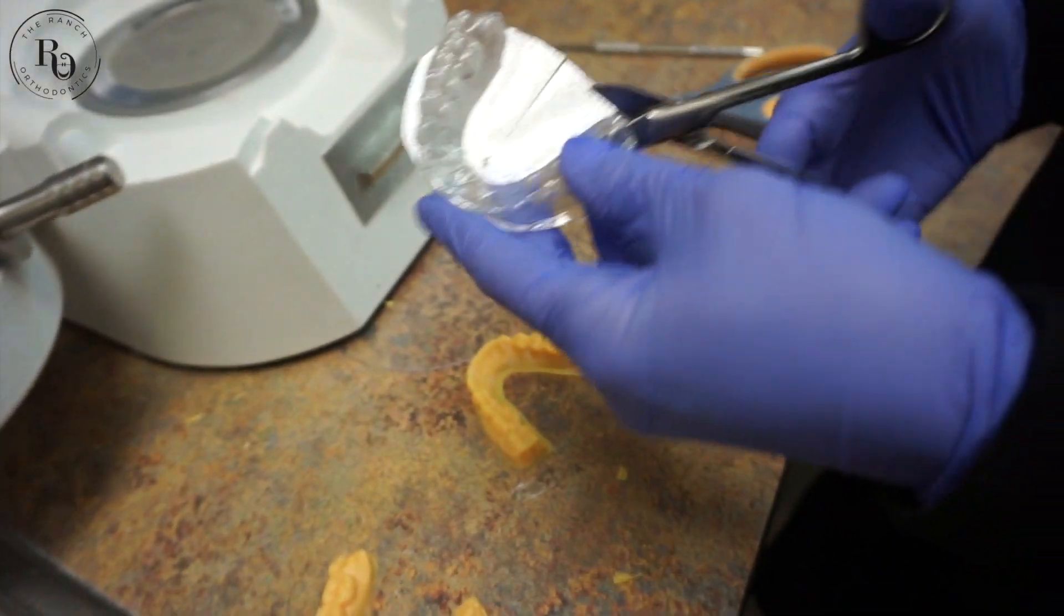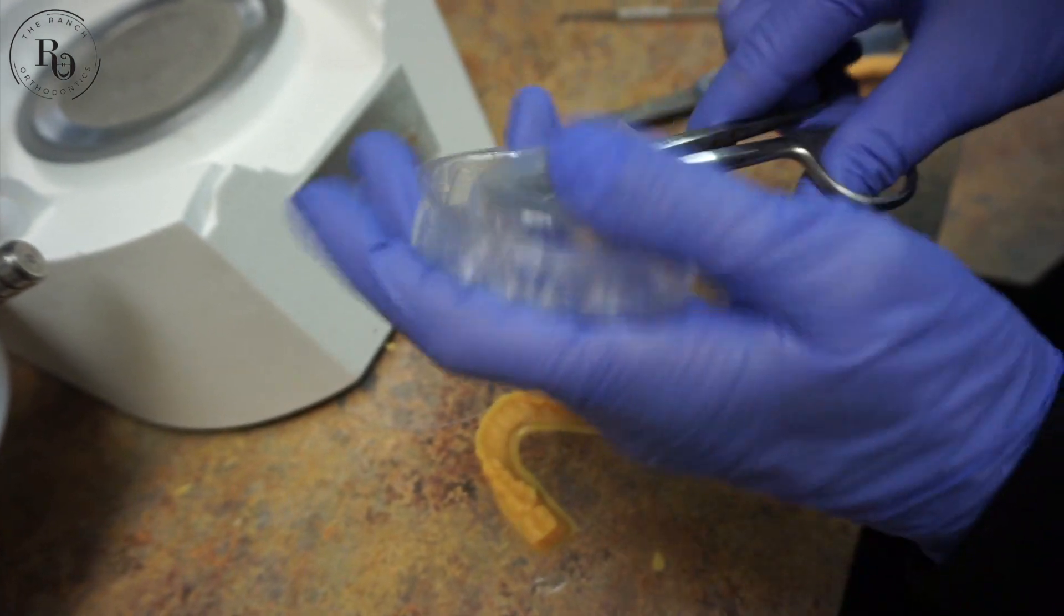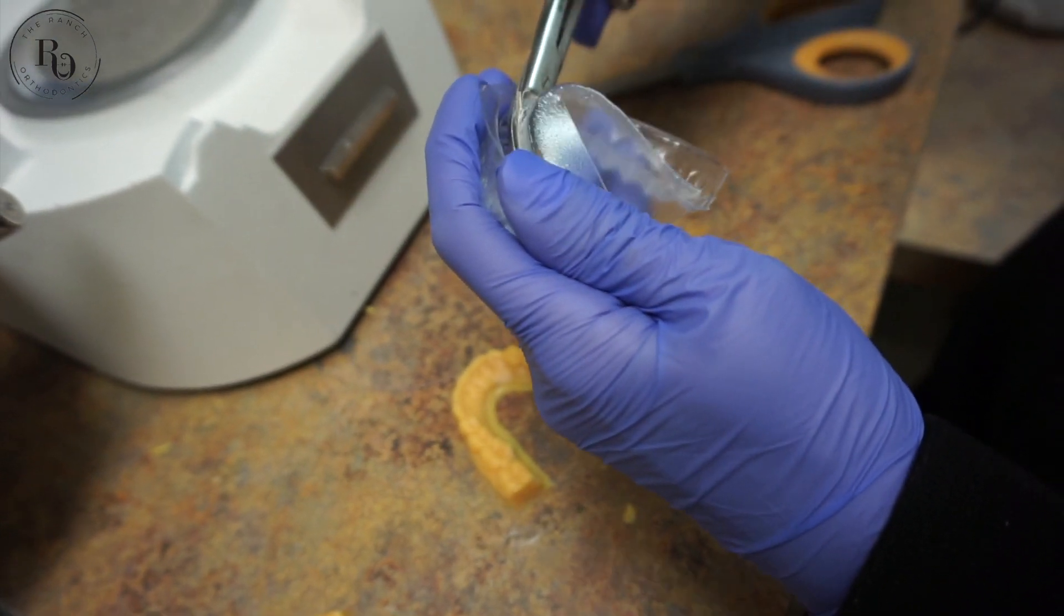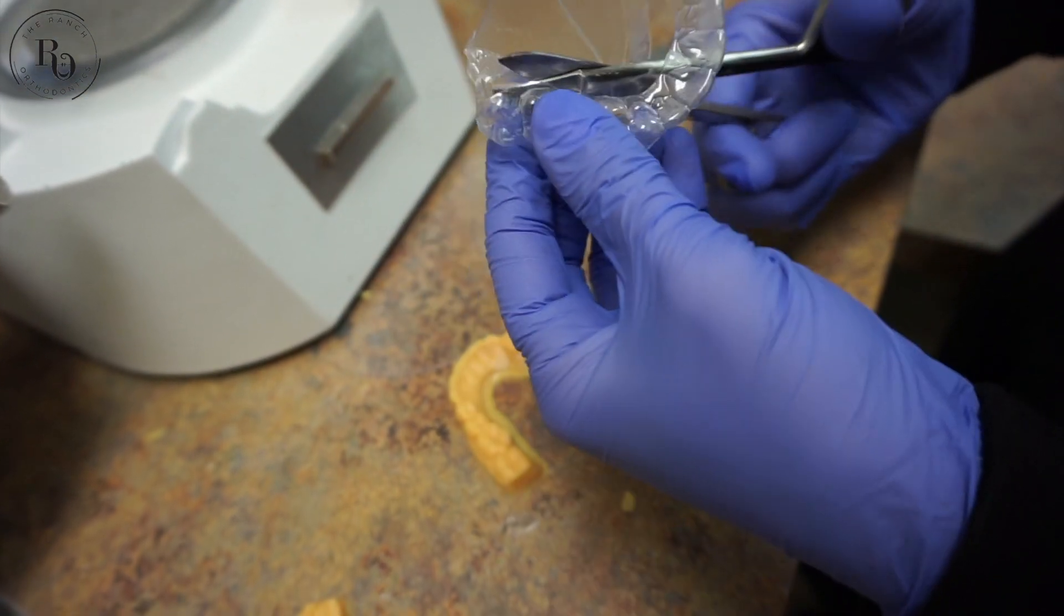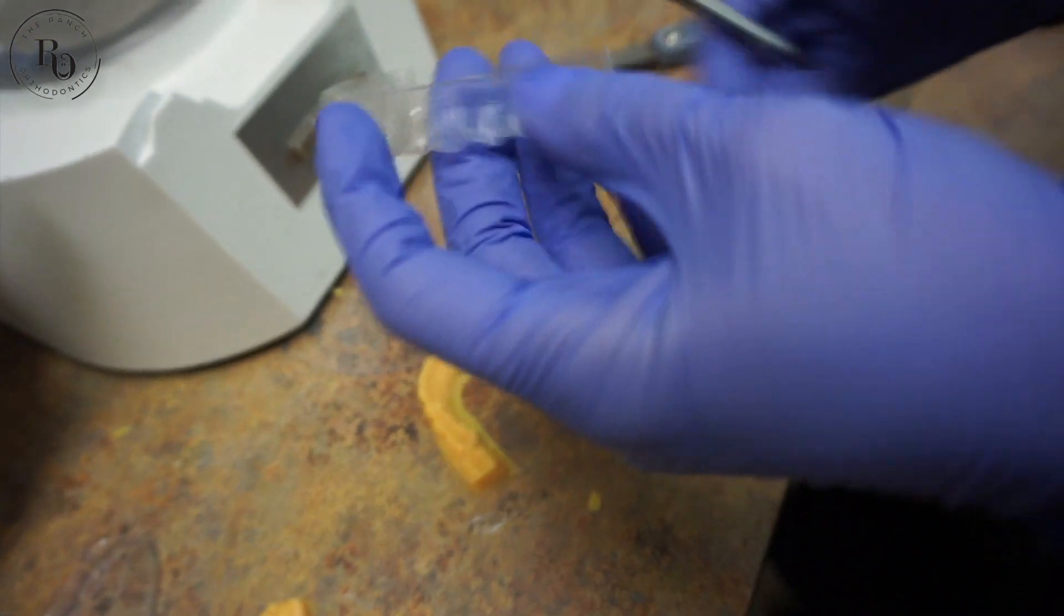You can see we cut the backs off so then we can just gently take your aligner off of the model and then we'll trim it out. Each individual aligner is handmade by one of our members of the digital team here and we inspect them to make sure that there aren't any pokey pieces or anything that's sharp.